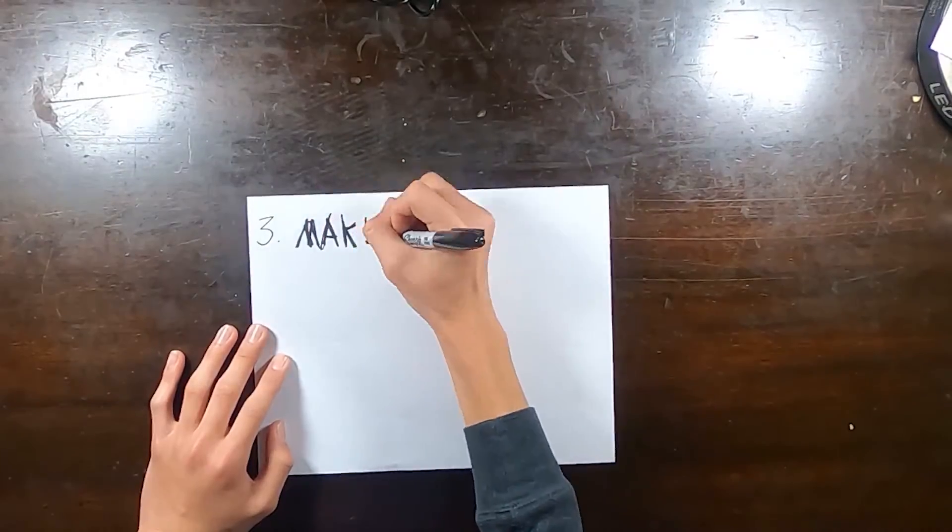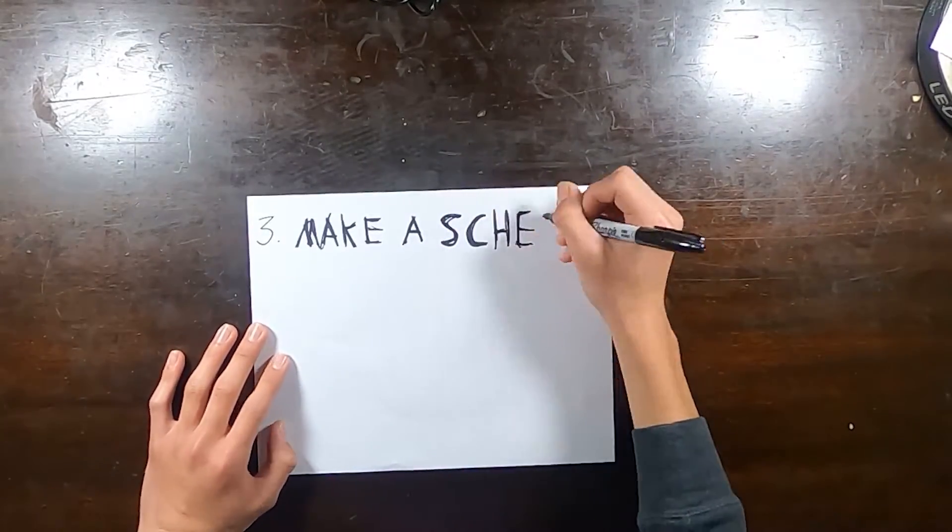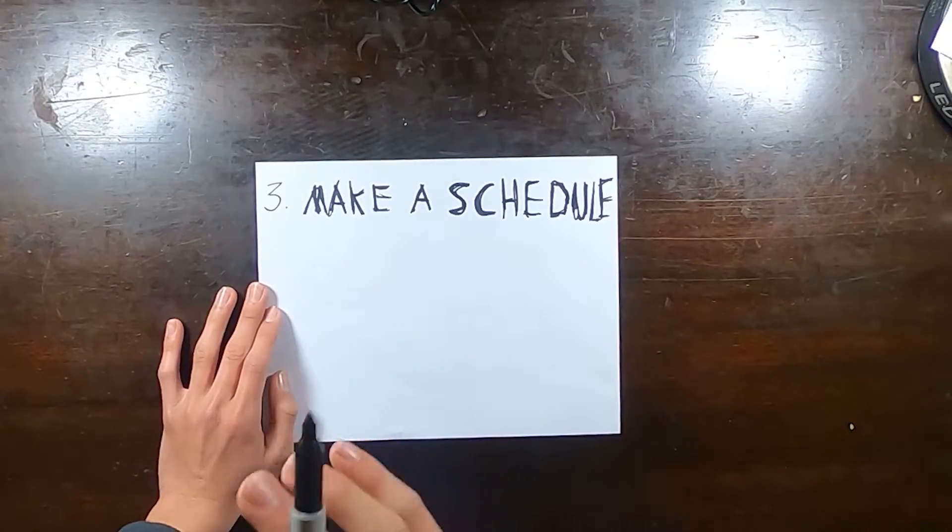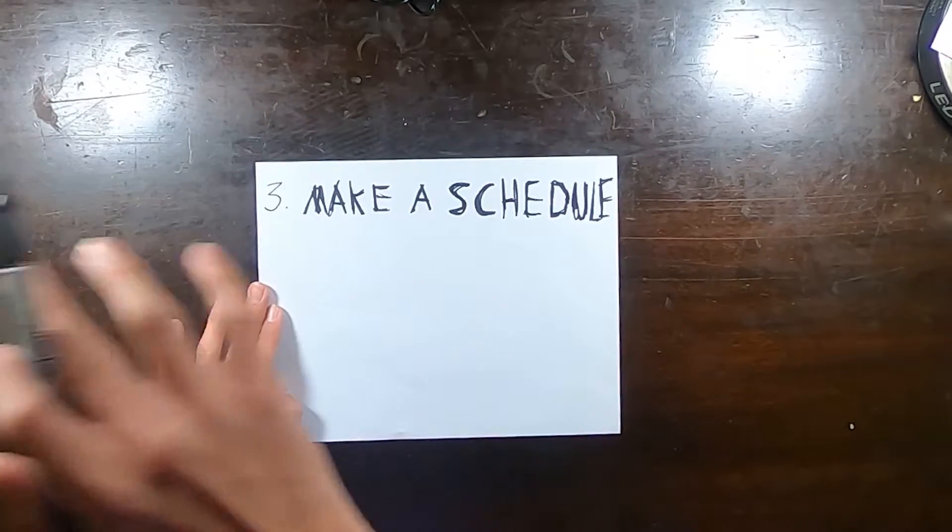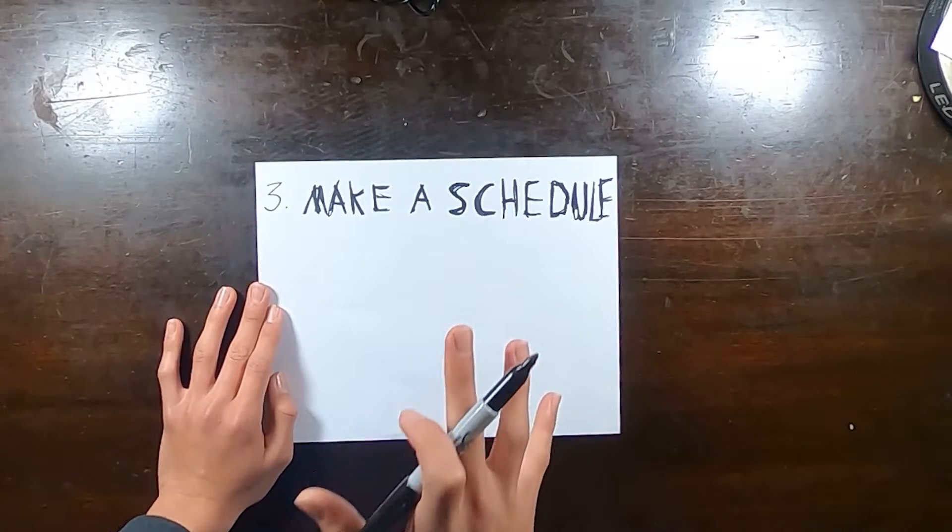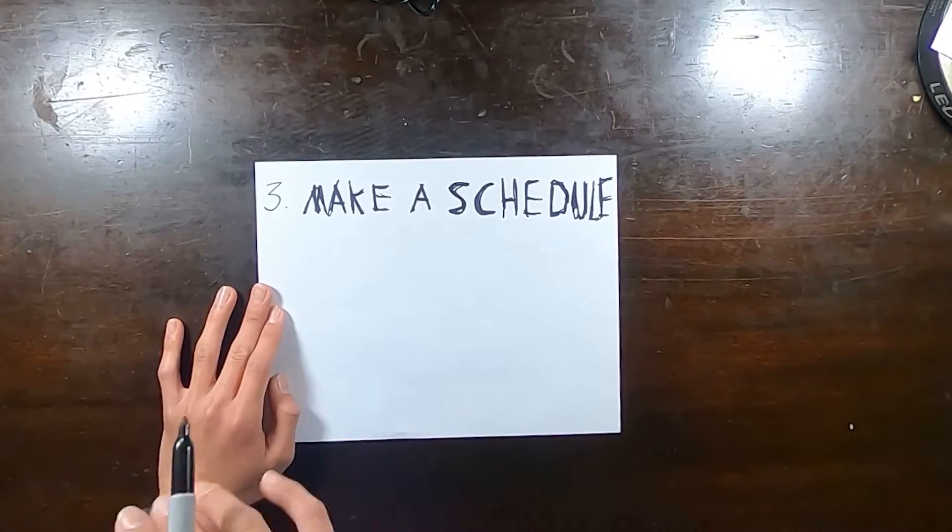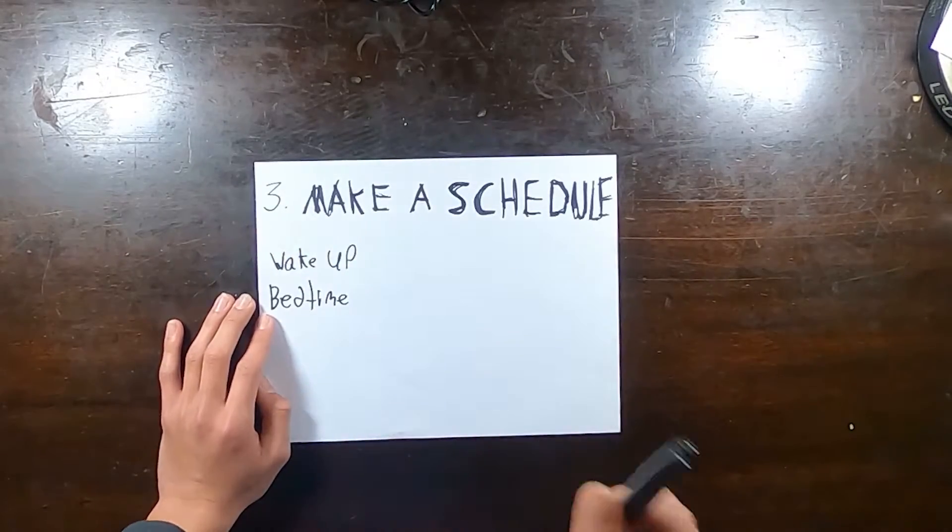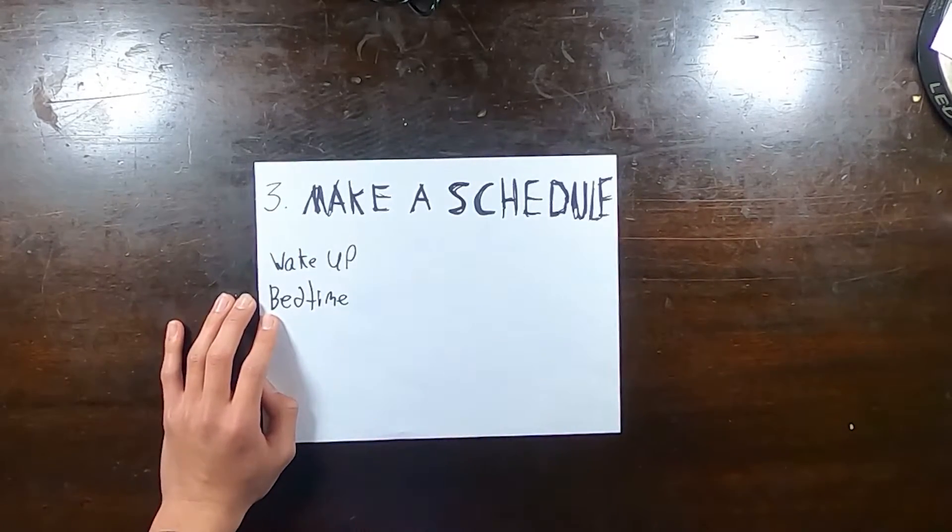Once you create that to-do list, you're going to want to do number three, and that is to make a schedule. So once you have your to-do list and you know what you have to do for the day, basically you're writing down on that to-do list everything that you want to accomplish before you go to bed tonight. You want to make a schedule from as soon as you wake up to bedtime and include every single little thing.